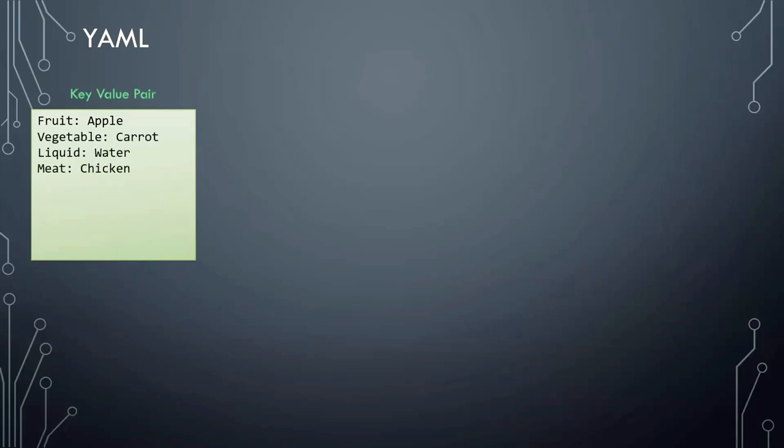Key and value are separated by a colon. The keys are fruit, vegetable, liquid, and meat, and the values are apple, carrot, water, and chicken. Remember, you must have a space followed by a colon differentiating the key and the value.